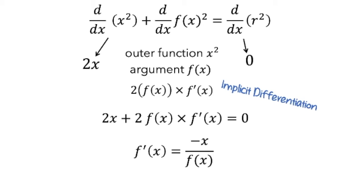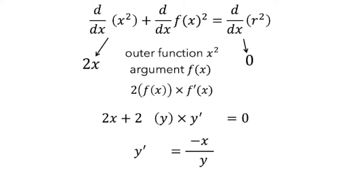We also could have used a slightly different notation. Instead of using f of x, we could have used the symbol y, giving us y prime equals negative x over y.